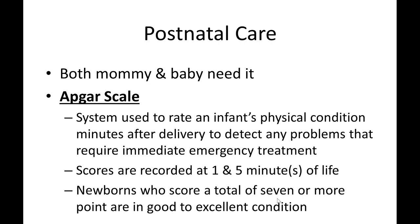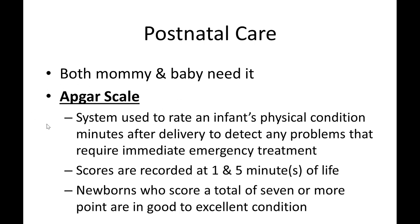APGAR is an acronym: A — Appearance, P — Pulse, G — Grimace, A — Activity, R — Respiration. For appearance: blue or pale is 0 points; pinkish body with blue extremities is 1 point; totally pink is 2 points. For pulse: absent is 0; below 100 BPM is 1 point; greater than 100 BPM is 2 points. A newborn's normal pulse is above 100 BPM, unlike adults whose normal is around 72 BPM.